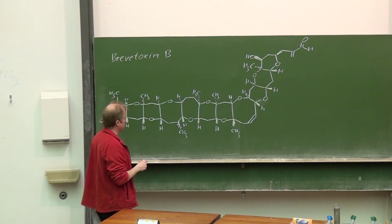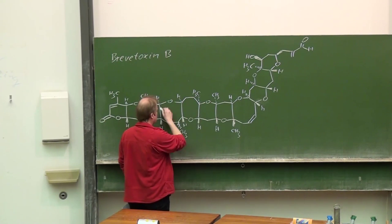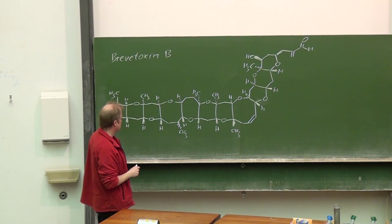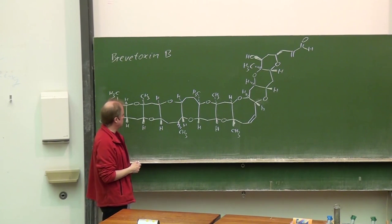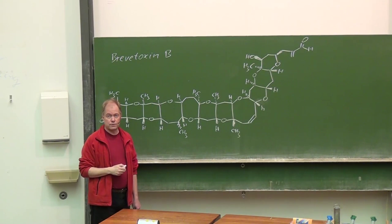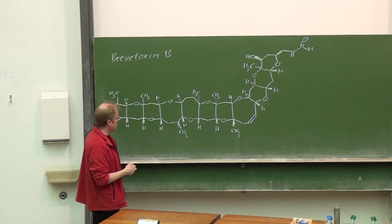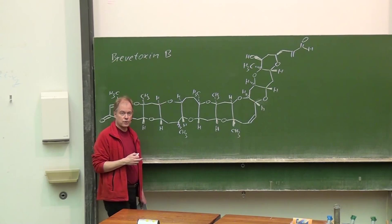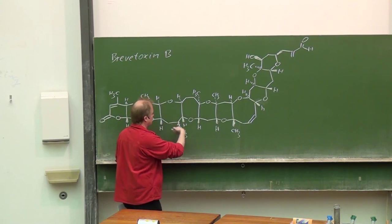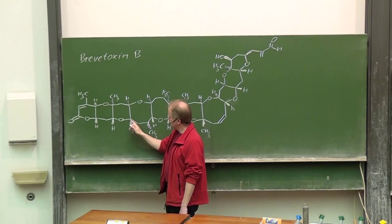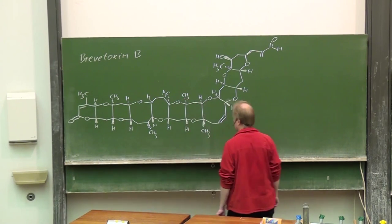Here we have two seven-membered oxygen heterocycles. Let us have a look at how one could synthesize a moiety like this. New methods have been tested by the group of K.C. Nicolaou at the Scripps Institute — I think in 1995 this synthesis was completed. Let's have a look at the model reactions modeling the formation of this type of structure: two seven-membered oxygen heterocycles with two six-membered rings annulated.